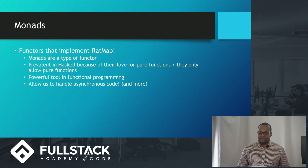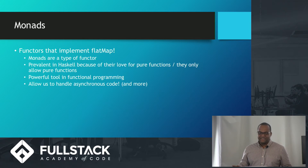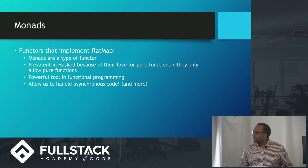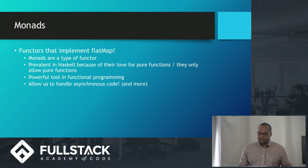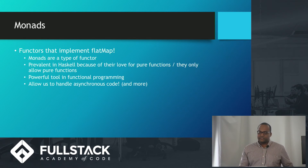So, monads. What's the difference between a functor and a monad? Monads are basically functors on steroids — they're very, very strong. Monads are a type of functor. They're prevalent in Haskell because Haskell loves pure functions. A pure function is basically a functor. Monads are a powerful tool in functional programming, and they allow us to handle asynchronous code, which is why we're so interested in monads.